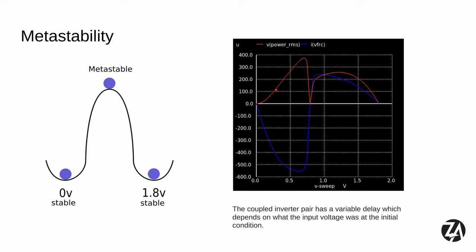Another way to visualize this is with a simulation: two inverters in a feedback loop, showing the current needed to force the circuit from a zero to a one state. If we square that we get power, and we can see that we have to do work to go up the hill. When balanced on top of the hill, the circuit just stays there — like a ball balanced on a hilltop — for a long time until something knocks it off. Depending on where we start, if we start near one side we fall back quickly, but if we start right in the middle it can take a really long time — and when I say long time, I mean picoseconds.